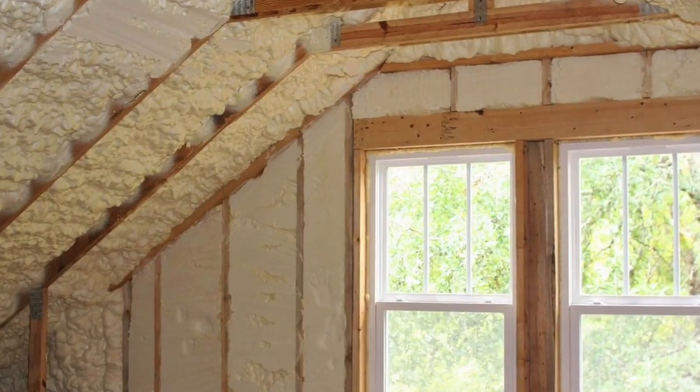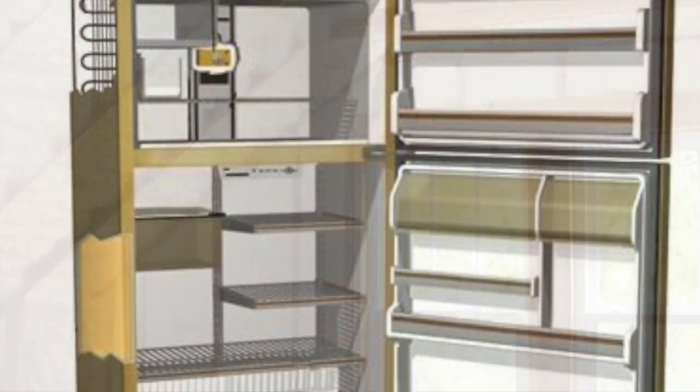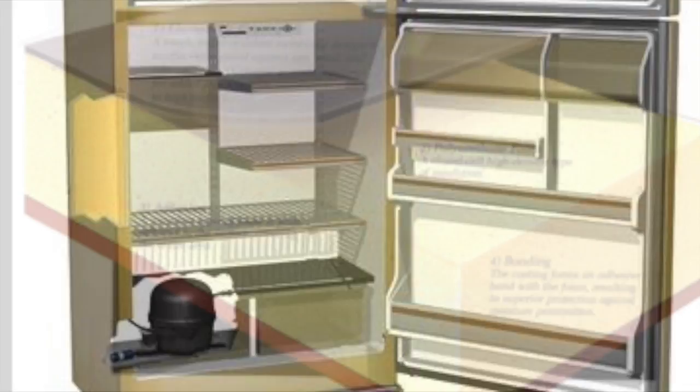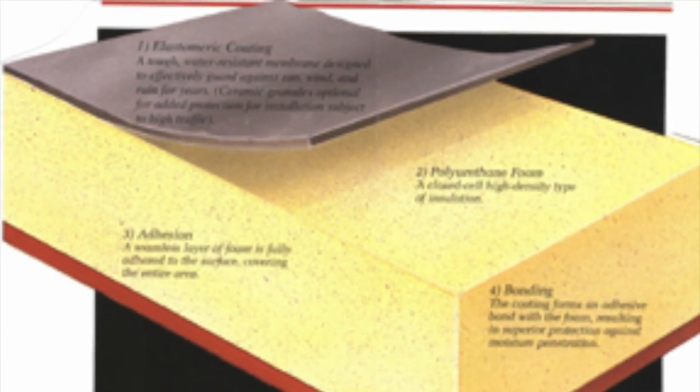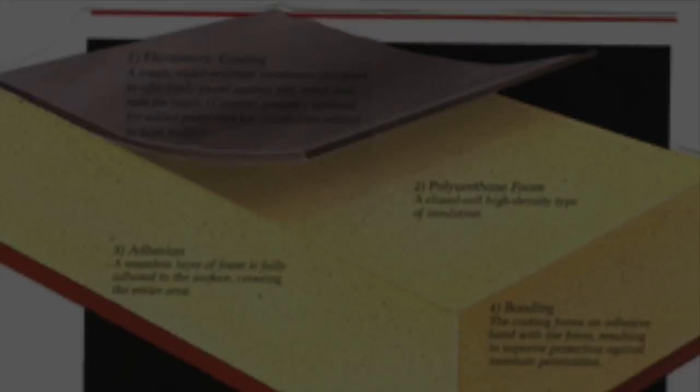Polyurethane foam is also widely used as hot and cold insulation for buildings, refrigerators, adhesives, and even carpet underlays in the form of flexible foams.